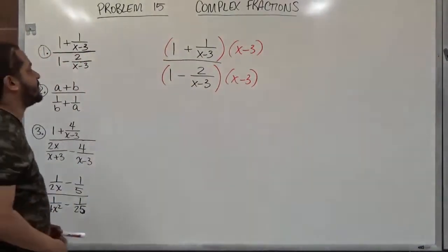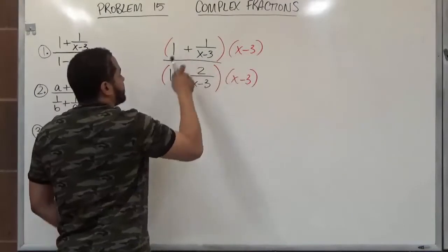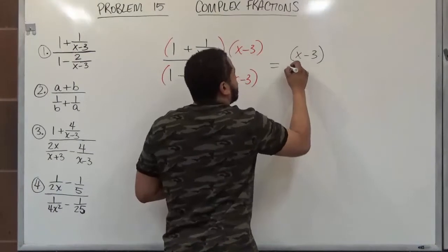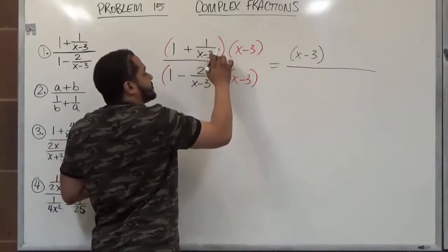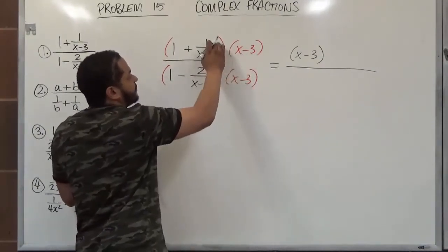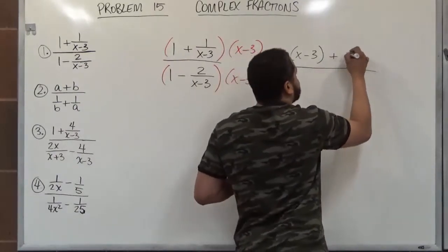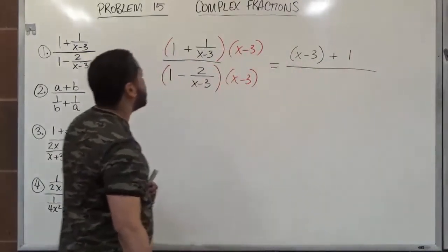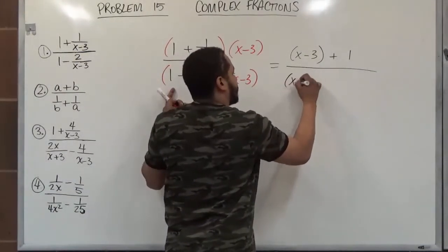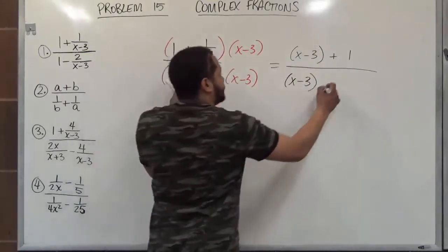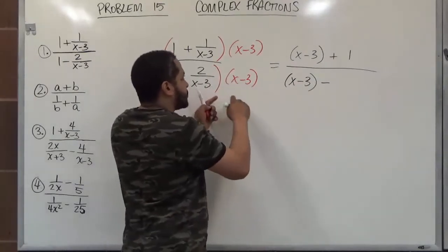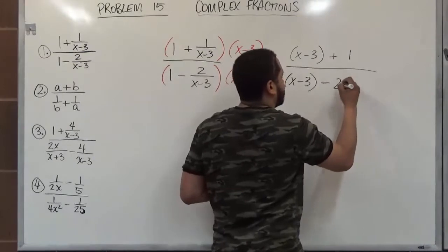When distributing x minus 3 to the first term, we get 1 times x minus 3, which is simply x minus 3. The following term is 1 over x minus 3 times x minus 3 — these are the same, so they perfectly reduce and we're just left with 1. In the denominator we also have 1 times x minus 3, giving x minus 3, and then negative 2 over x minus 3 times x minus 3 — these also reduce to 1, leaving us with just the 2.